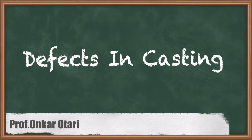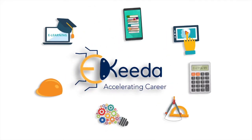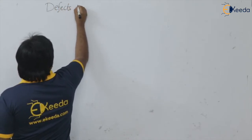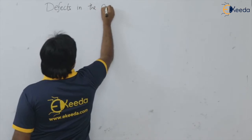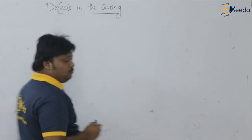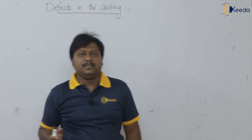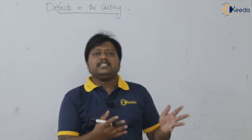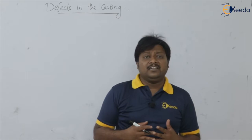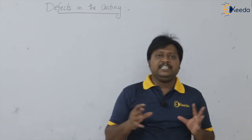Dear friends, in this video, we are going to see the various defects which are generated or occurred during the casting process. There are many kinds of defects which can be generated during the casting process. For example, there are the gaseous defects, there are the molding procedure defects, and there are some metallurgical defects. We will see them one by one.